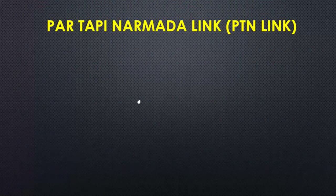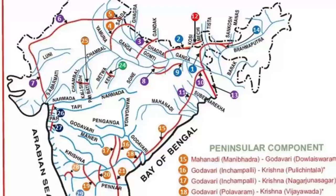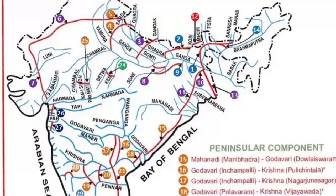Now let's talk about the Par-Tapi-Narmada link project. As you can see on the map, there are three different links that are part of Gujarat state. The first is the Yamuna-Rajasthan-Sabarmati link, the second is the Damanganga-Sabarmati-Chorwad link, and the third is the Par-Tapi-Narmada link.